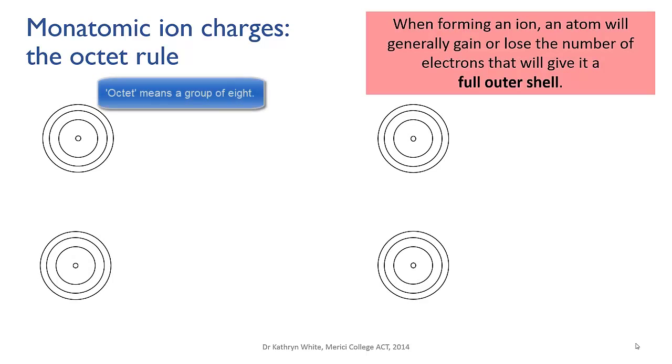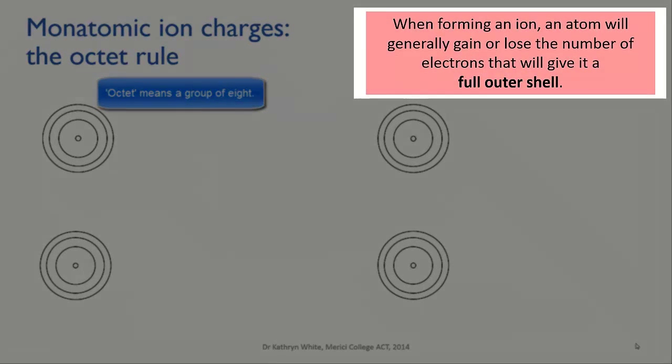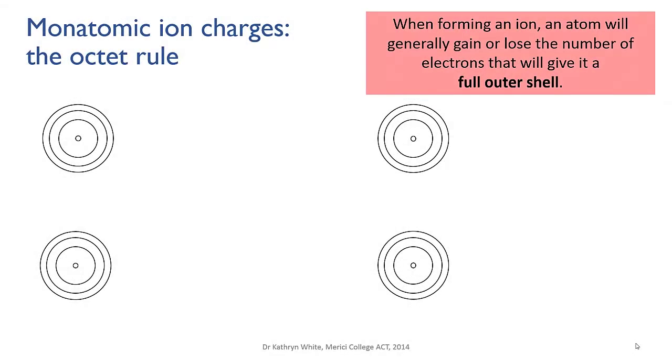We do this using a rule of thumb called the octet rule. This says that it's energetically favorable for an atom to lose or gain the number of electrons that will give it a full outer shell, so a full valence shell.